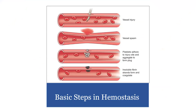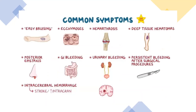The basic steps in hemostasis: when there is a vessel injury, a vessel spasm occurs. Then platelets come and adhere to the injury site, aggregating to form a plug. After that, insoluble fibrin strands form and coagulate into the clot.